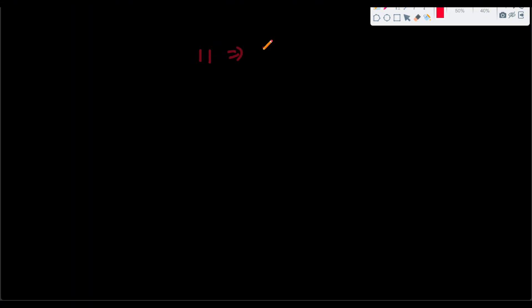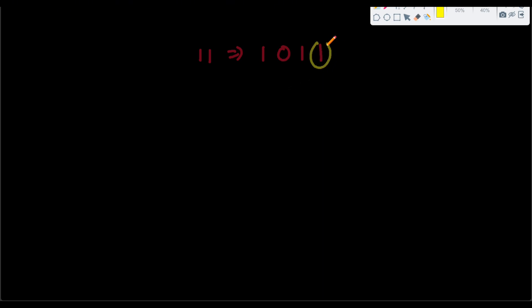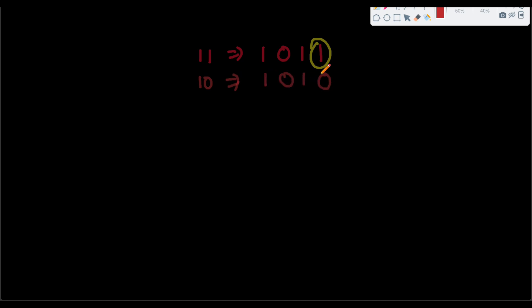Let's look at the binary representation of 11 again and focus on the least significant bit, which is the rightmost bit. How do we know if this bit is 1 or 0? If the number is odd, then this bit is 1; if it is even, this bit is 0. For example, the even number 10 has 0 as its last bit. So we can divide the number by 2 — similar to the decimal-to-binary conversion — and if there is a remainder, the last bit is 1; otherwise it is 0.